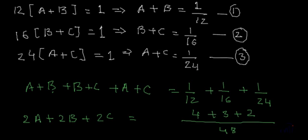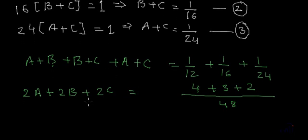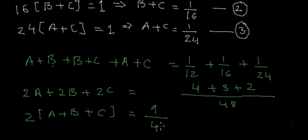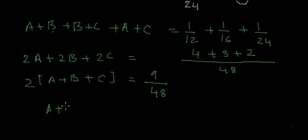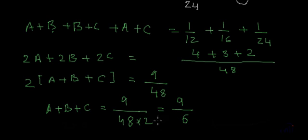Right? So we have got 2 times A plus B plus C. This will be equal to 4 plus 3 is 7. 7 plus 2 is 9 divided by 48. Right? So A plus B plus C is equal to 9 divided by 48 multiplied by 2. This will be equal to 9 divided by 96.